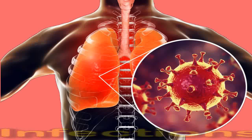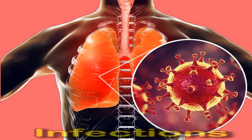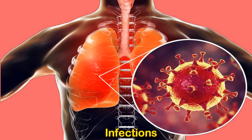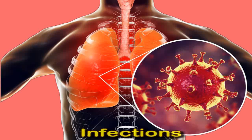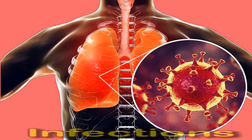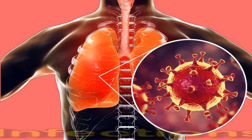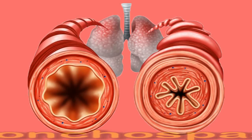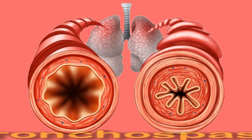Potential respiratory-related causes of chest pain include infections. Viral and bacterial infections can lead to inflammation in the lung airways and tiny air sacs known as alveoli. In addition to chest pain, lung and chest infections can lead to difficulty breathing, shortness of breath, coughing up yellow-green or bloody mucus, fever, chills, and fatigue.